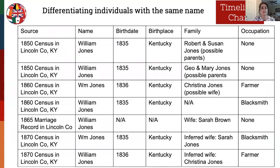Here's an example of a timeline or chart differentiating individuals with the same name. There are two William Jones, both born in 1835, both living in Lincoln County, Kentucky. But as you move across the columns you start seeing different parents — so now we have to figure out which is which. We also see different wives, and in the occupation column we have different occupations, and we can start to sort them out.